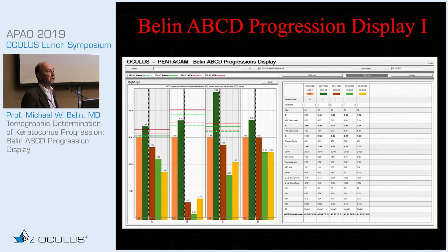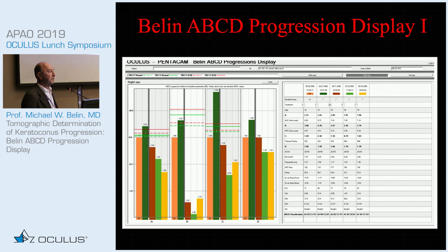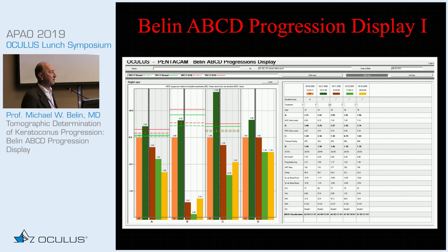Version one of the ABCD display showed a graphical analysis of the different anatomical layers: the anterior, the posterior, the minimal corneal thickness, and the distance visual acuity. It showed both a graphical change over time and indicated when measurements crossed an 80% or 95% confidence interval. Confidence intervals are shown in red for the keratoconic population and green for the normal, with solid lines representing 95% and dashed lines representing 80% confidence intervals. Additionally, a tabular section showed parameters historically used to determine progression.